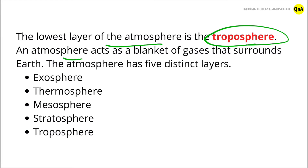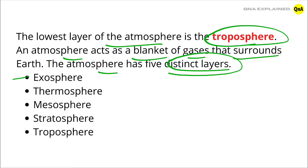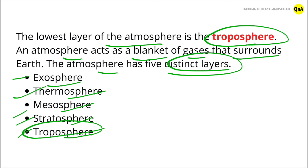An atmosphere acts as a blanket of gases that surrounds Earth. The atmosphere has five distinct layers. The first one is exosphere. The second one is thermosphere. The third one is mesosphere. The fourth one is stratosphere. The last one is troposphere. So, these all are the layers of atmosphere.